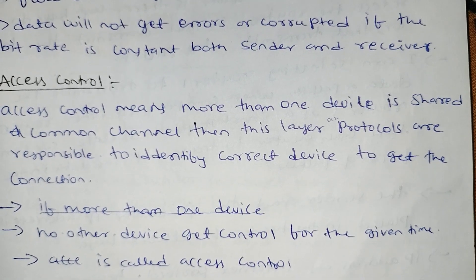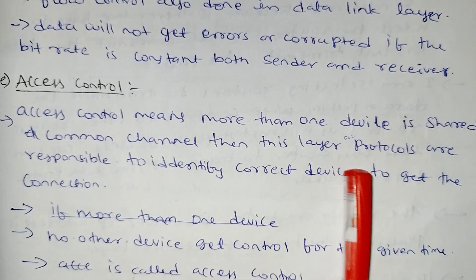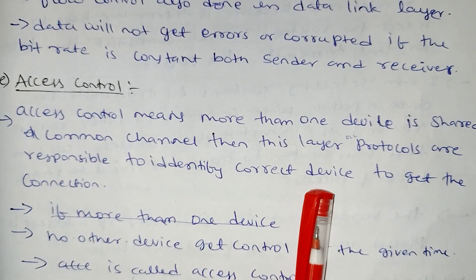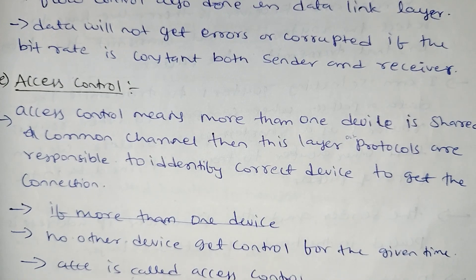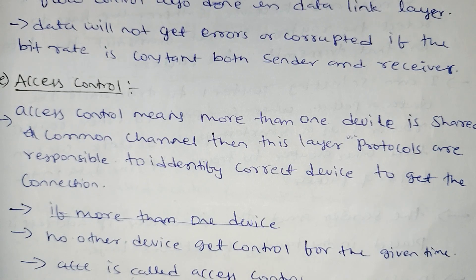Access control is also a function. Access control means more than one device shares a common channel. The data link layer protocol is responsible for identifying the correct device to get a connection, so no other devices get control at a given time. This is called access control.